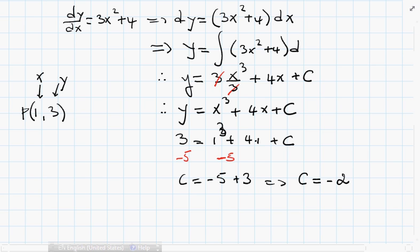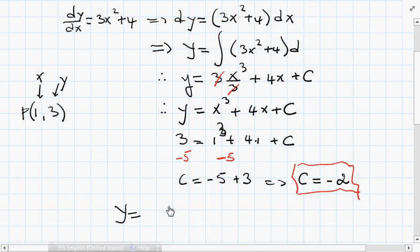Our constant of integration has the value -2. So now we can rewrite the function. Our function will therefore be y = x³ + 4x - 2, and that's our original function.